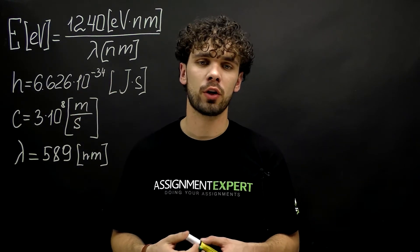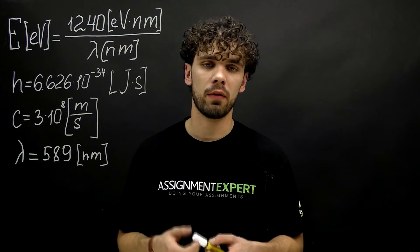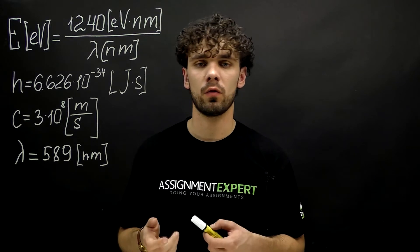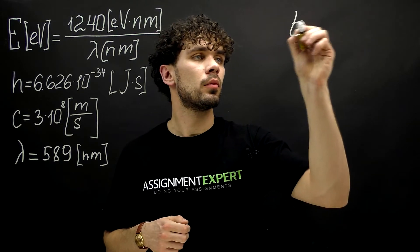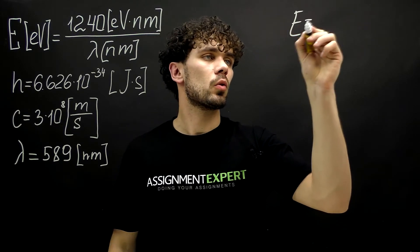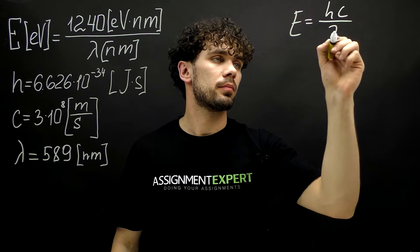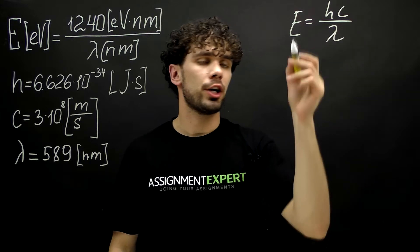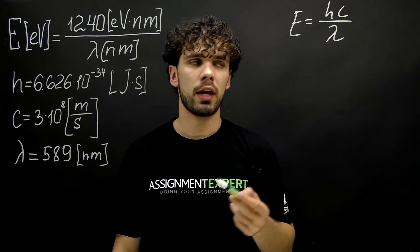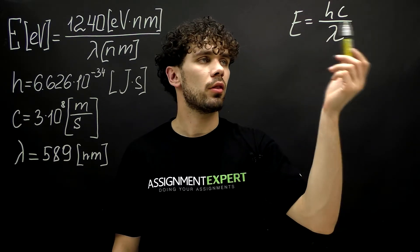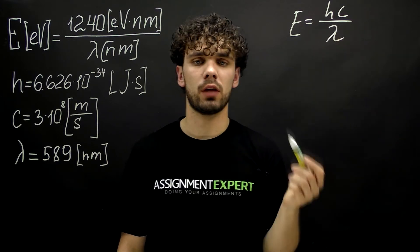First of all, let's recall that the energy of a photon is related to its wavelength in an inverse relationship: E equals hc over lambda. Where E is the energy of a photon, lambda is its wavelength, and in the numerator we have Planck's constant and the speed of light.